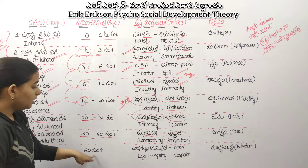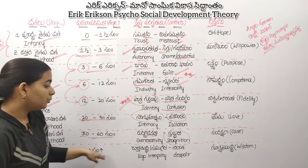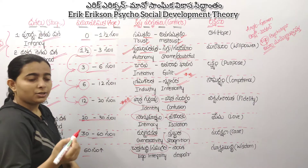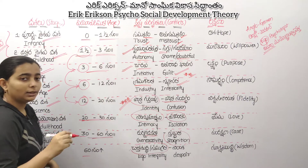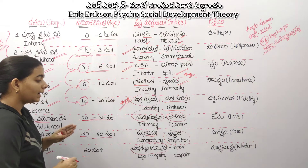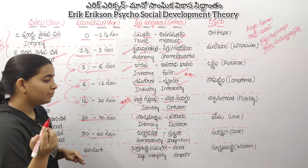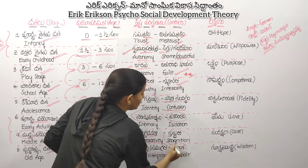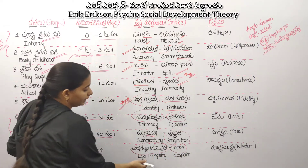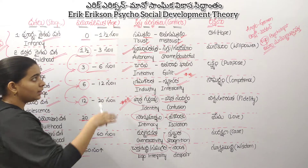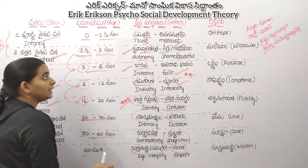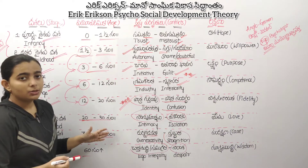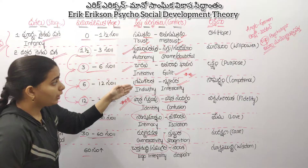Next is Ruddha Piyadasa — the age of 60 and above. Here, Chittasuddhi means Satisfaction. The conflict is Ego Integrity vs. Despair. You can look at both sides — one leads to satisfaction, the other to despair.